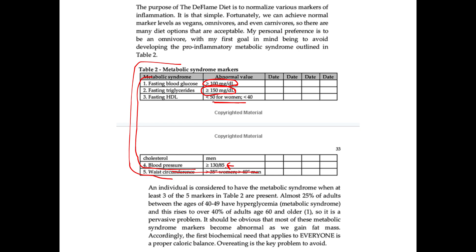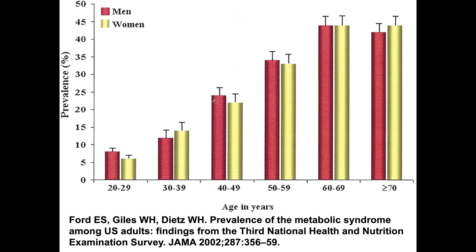So how common is this? Looking at the broad population based on data from about 20 years ago, which has been tracked for a long time: going right to the 60-and-older group, about 45% of the entire adult population 60 and older have metabolic syndrome — pro-inflammatory.